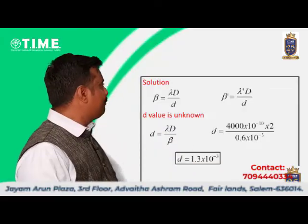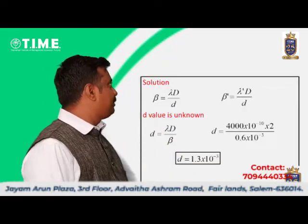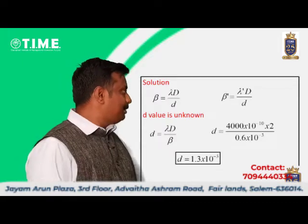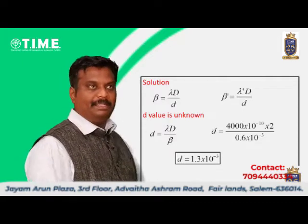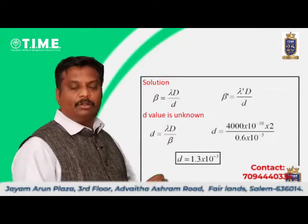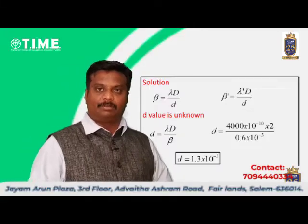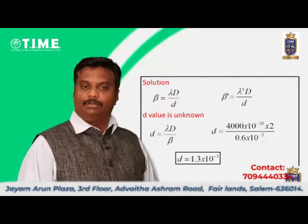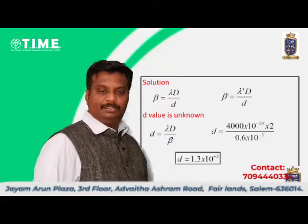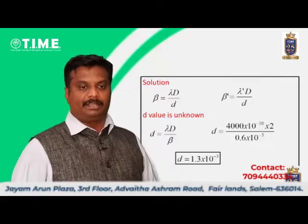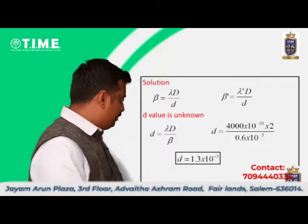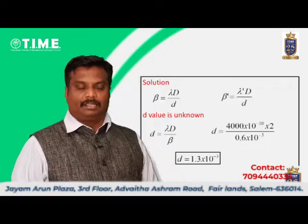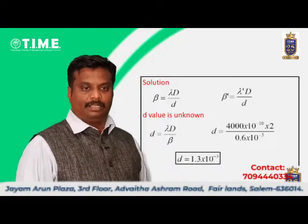Beta equals lambda into capital D divided by small d. Rearranging, small d equals lambda into capital D divided by beta. Substituting the values: d equals 4000 into 10 power minus 10, capital D equals 2 meters, beta equals 0.6 millimeter, that is 0.6 into 10 power minus 3. So the value of d is 1.3 into 10 power minus 3 meters.